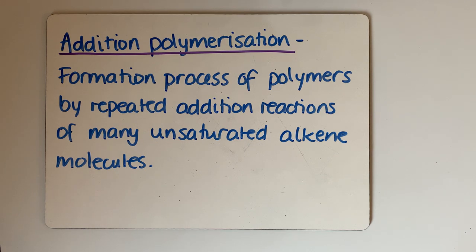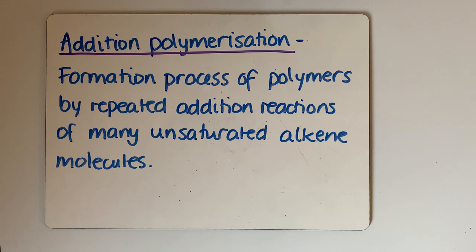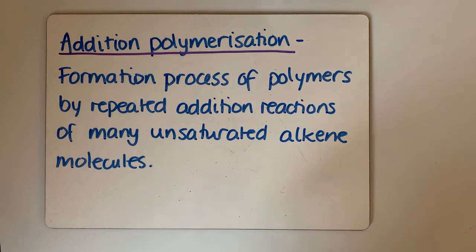This type of polymerization is one that only alkenes can undergo. It's worth knowing that there is another type of polymerization — condensation polymerization — that we look at in module six, so we're not going to cover that until next year. When it comes to addition polymerization, that's the one to do with alkenes. Only alkenes can undergo addition polymerization.